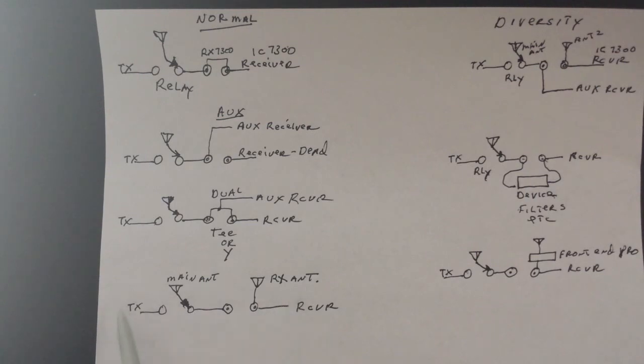So that way, when you key the rig, your signal would go out up to the relay, out the main antenna. And then when you're receiving, all your signal for the receiver would come from the auxiliary receive antenna.